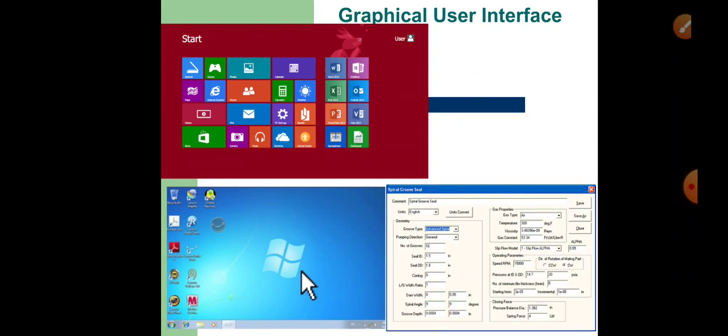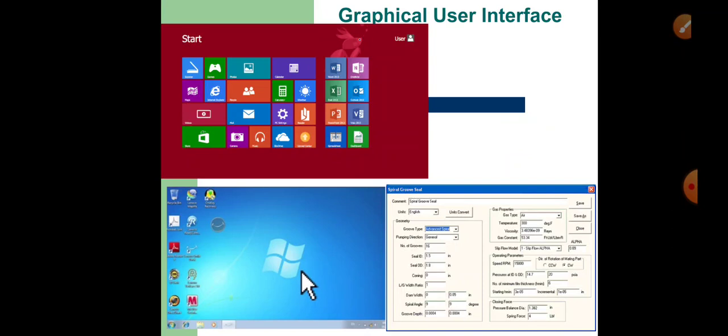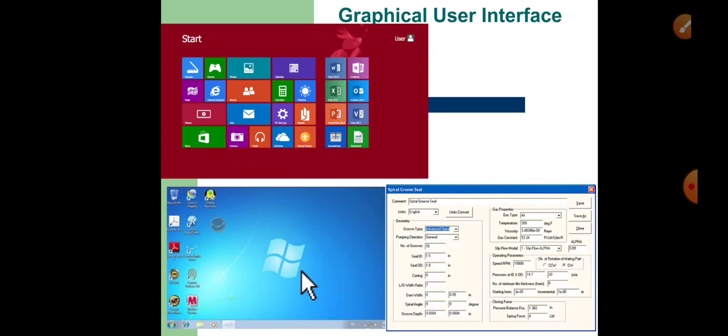GUI means everything is present in the form of pictures, images, icons, and menus, and we give commands with the help of these things only. In a non-GUI based operating system, we have to type commands for everything using the keyboard. But in the Windows operating system, we are provided with a graphical user interface — everything is there in the form of pictures, buttons, and menus, and it is very easy to use them with the help of a mouse.